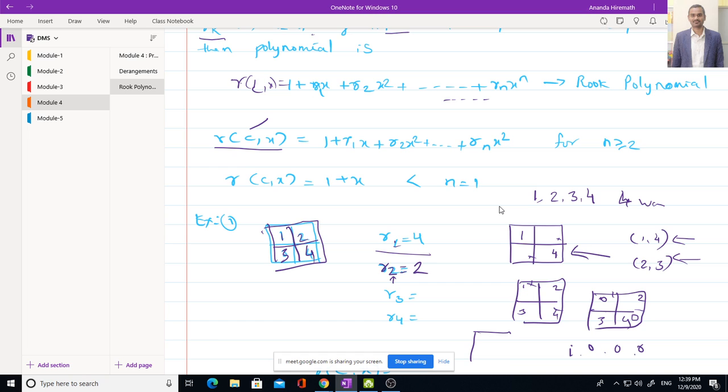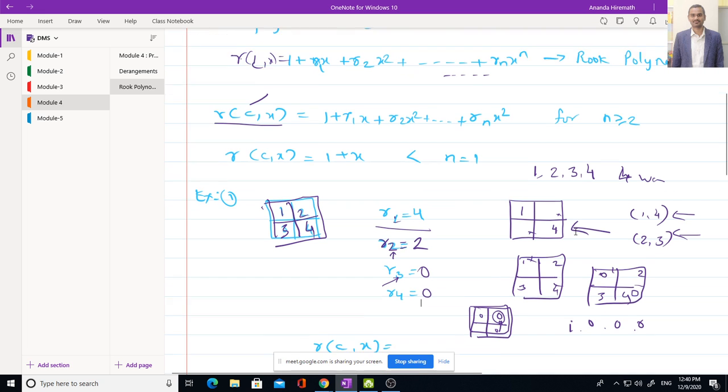It means that there are no ways of arranging those three pawns in this box, in this square board. Because if you keep these two, where you are going to keep third one? There is no way. If you keep it, this will capture it. So R₃, have you understood why R₃ is equal to zero? Because it is not possible to arrange those three pawns in the given board. Similarly R₄ is equal to zero.